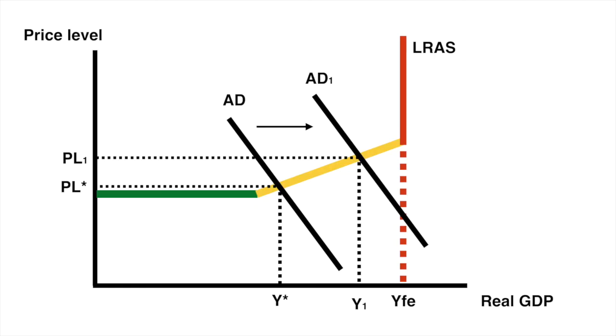Demand pull inflation is the result of an increase in aggregate demand. I'll use the Keynesian LRAS to illustrate it. If the economy is operating along the upward sloping portion of the LRAS, then increases in aggregate demand will cause increases in real GDP and the price level.